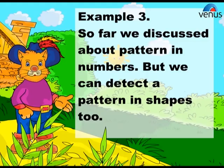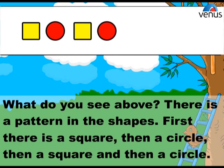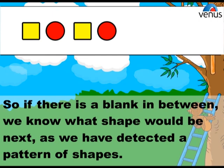Example 3. So far we discussed patterns in numbers, but we can detect a pattern in shapes too. What do you see above? There is a pattern in the shapes. First there is a square, then a circle, then a square, and then a circle. So if there is a blank in between, we know what shape should be next.